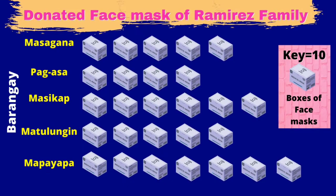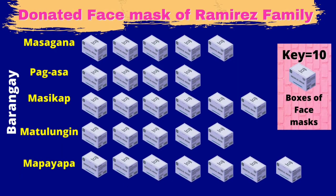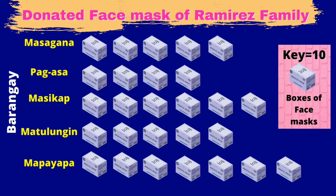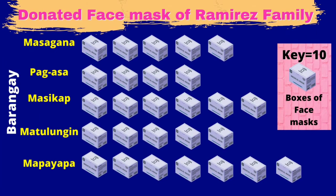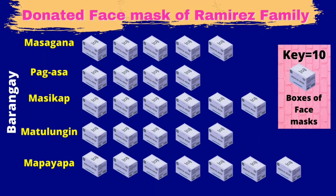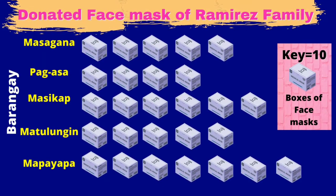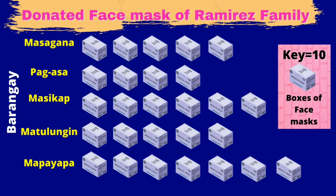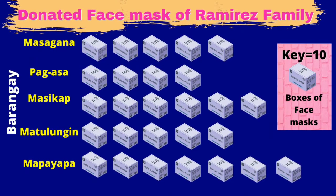To get the number of boxes of face masks, we are going to multiply each number of pictures by 10. In Barangay Masagana, there are 5 pictures — multiplied by 10, that is 50 boxes. In Barangay Pag-asa, 4 times 10 equals 40 boxes. In Barangay Masikap, 6 times 10 equals 60 boxes. In Barangay Matulungin, 5 times 10 equals 50 boxes. And in Barangay Mapayapa, 7 times 10 equals 70 boxes of face masks.